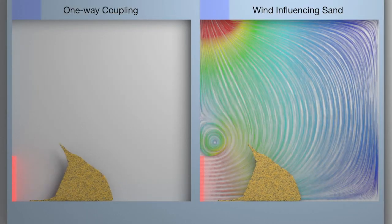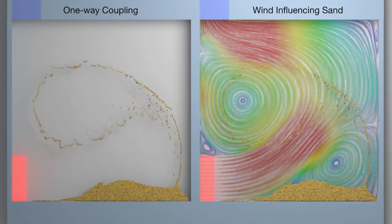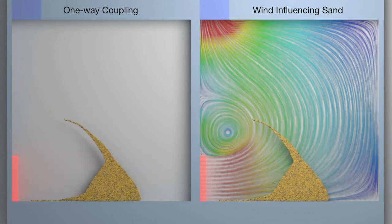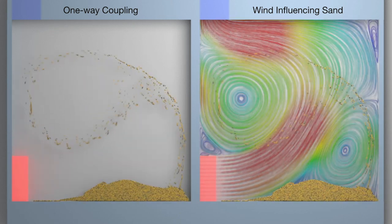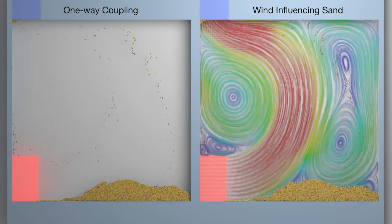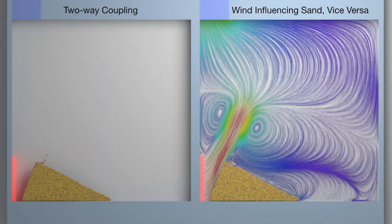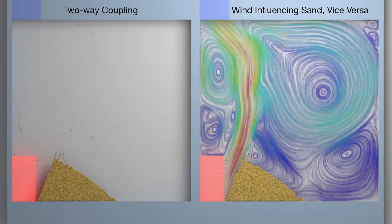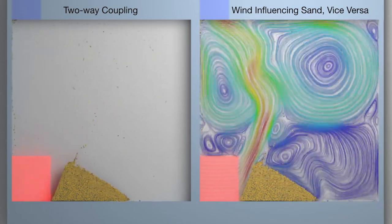Two-way solid-fluid interaction is very important in particle-laden phenomena. In this wind-blowing sand dune example, a one-way coupled simulation where sand does not affect wind fails to produce realistic dynamics. Our method, on the other hand, successfully captures the characteristic behavior of a sand dune migrating forward through accurate handling of the momentum exchange between sand and air.